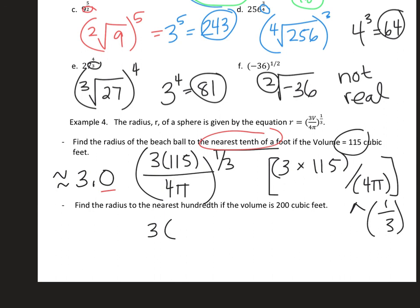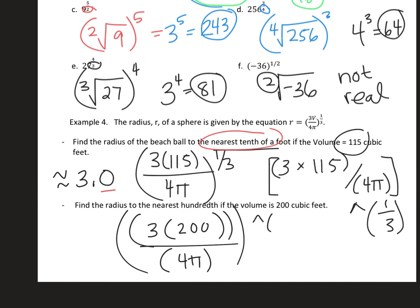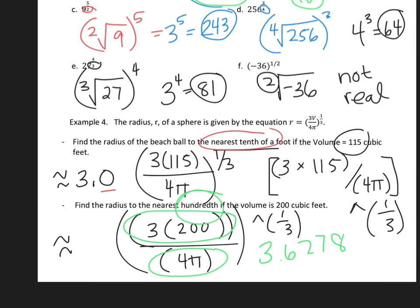For the second one, plug in 200: 3 times 200, divided by 4π, to the 1/3 power. Put your numerator in parentheses divided by the denominator in parentheses — you can also do it in multiple steps and then take it to the 1/3 power. I got 3.6278, so to the nearest hundredth this is approximately 3.63. Both of these units should be in feet.